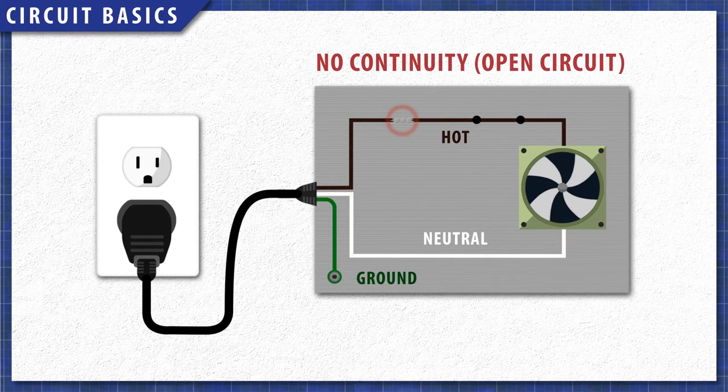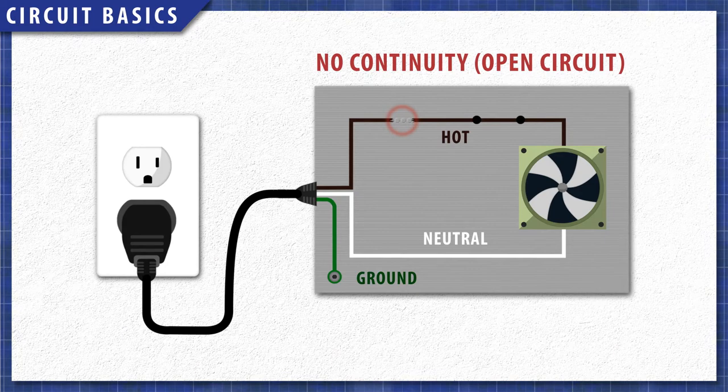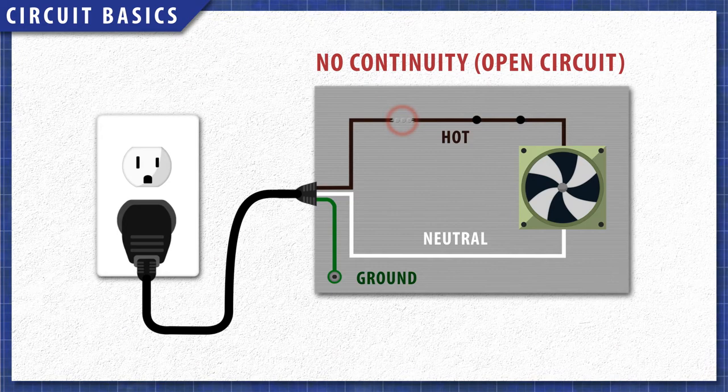If we disrupt this path with rubber, plastic, or by air in the case of a broken wire, then the current will not flow, as there is no continuity. This is an open circuit.